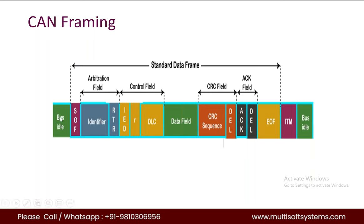The bus idle state will always be recessive — always one. After that we have SOF. SOF stands for Start of Frame, which indicates that a new frame is entering the network. It is one bit of data and it tells us that a new frame is entering the network.